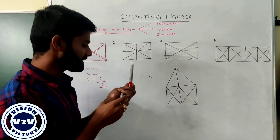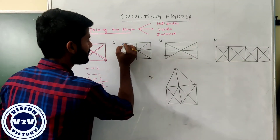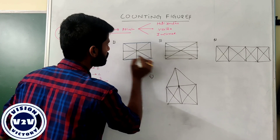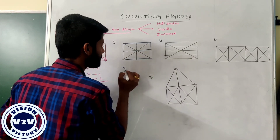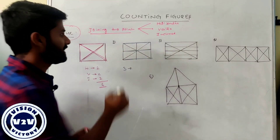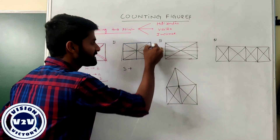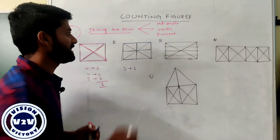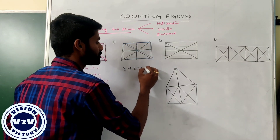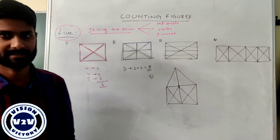If you count in the same manner, the total number of horizontal lines are three. Again, we have three vertical lines. And there are two inclined lines. The total number of lines in this figure is equal to eight.